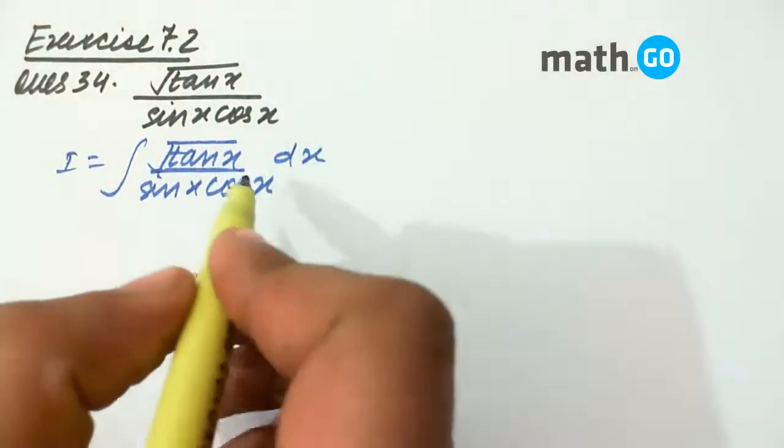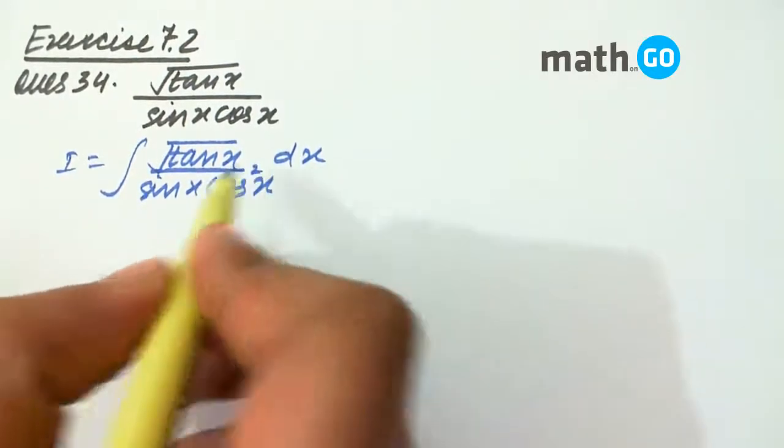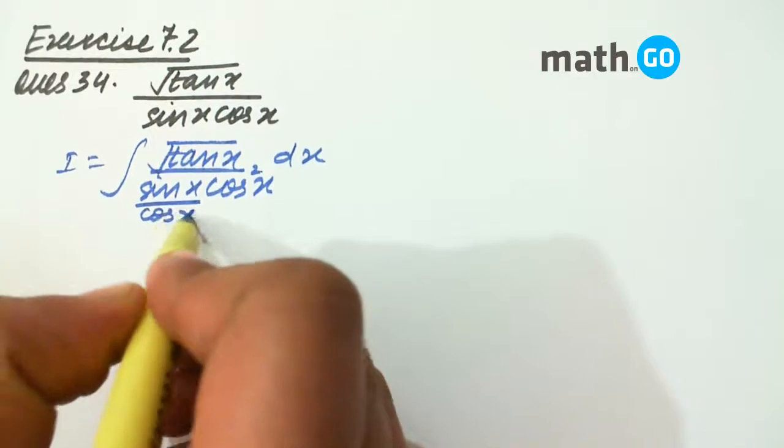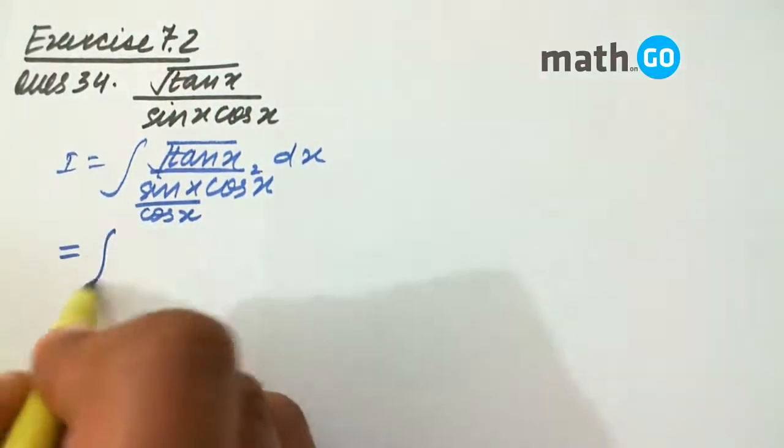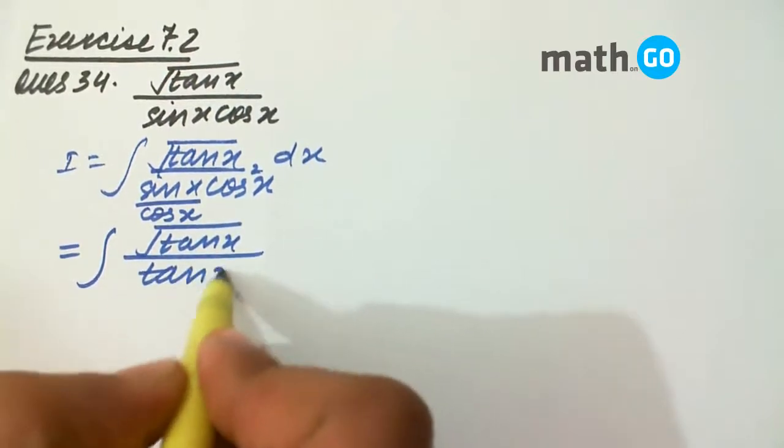If we multiply and divide the denominator by cos x, we will get cos square x upon sin x by cos x. That will be root of tan x upon tan x.